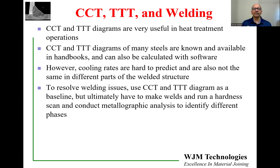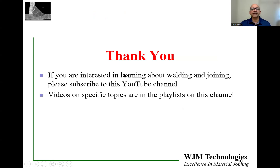A metallurgy lab can tell you exactly what phases — pearlite, martensite, bainite — are present at different weld locations. Keep in mind this discussion is primarily for carbon steels. As alloying elements are added, the shapes of CCT diagrams change and affect welding behavior — those topics will be covered in later videos. Thank you for your time; if you're interested in welding and joining, please subscribe to this YouTube channel. There are many videos across different playlists, and wishing you the very best in your efforts to improve welding quality.